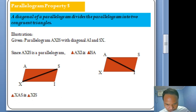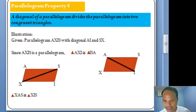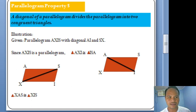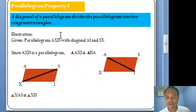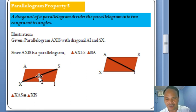These two triangles are triangle AXI and triangle ISA, which are congruent. For the other diagonal SX, triangle XAS is congruent to triangle XIS. So Parallelogram Property No. 5 states that each diagonal divides the parallelogram into two congruent triangles.